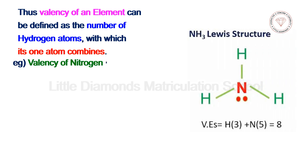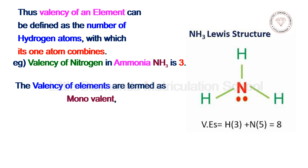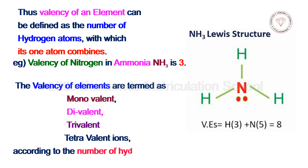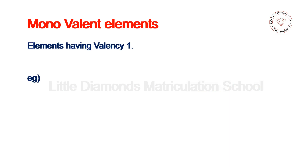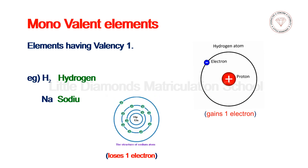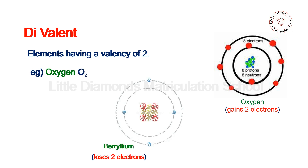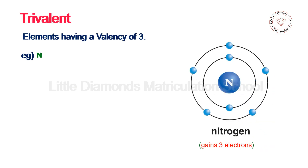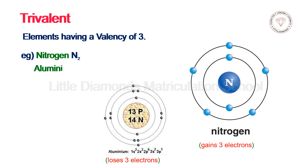For example, valency of nitrogen in ammonia (NH₃) is 3. The valency of elements is termed as monovalent, divalent, or trivalent according to the number of hydrogen atoms with which one atom combines. Monovalent elements have valency 1, for example hydrogen (H) and sodium (Na). Divalent elements have valency 2, for example oxygen (O) and beryllium. Trivalent elements have valency 3, for example nitrogen (N) and aluminium (Al).